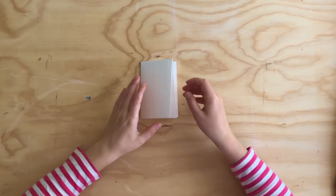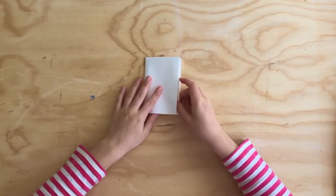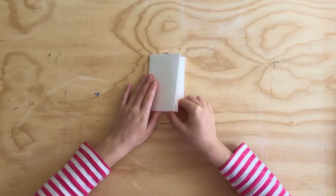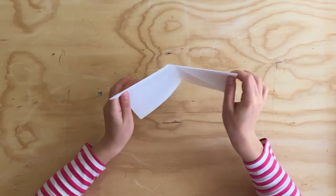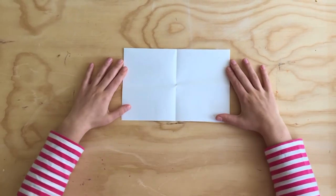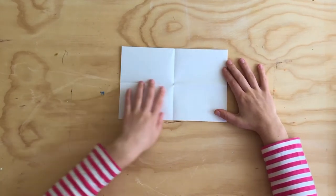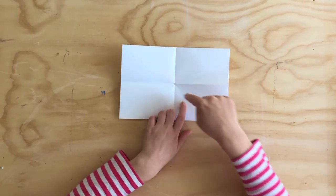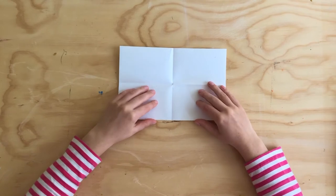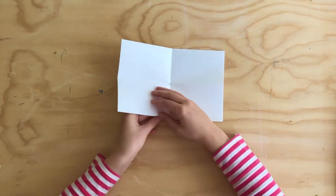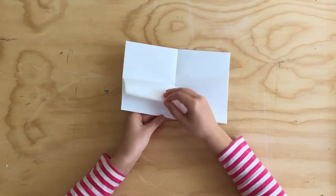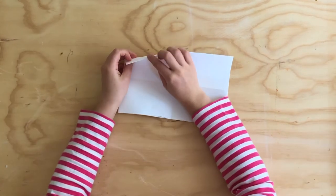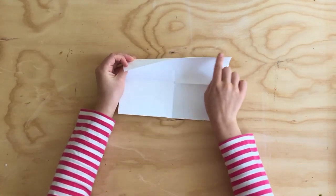Okay, the next step is we're gonna unfold just one time. So we're gonna unfold, and our paper is gonna look like this. It's gonna have four rectangles, and one side is gonna be open like this, and the other side is going to be the closed folded edge.